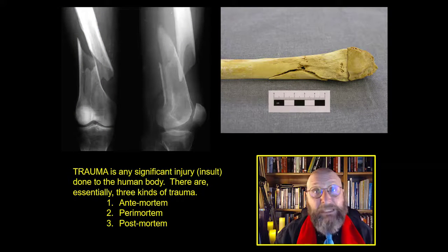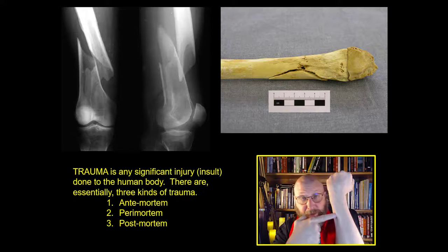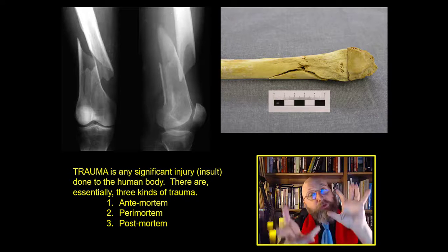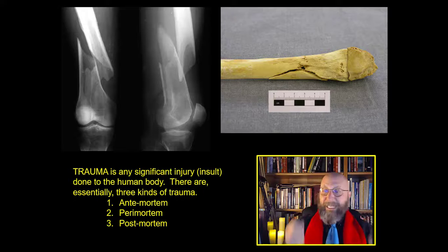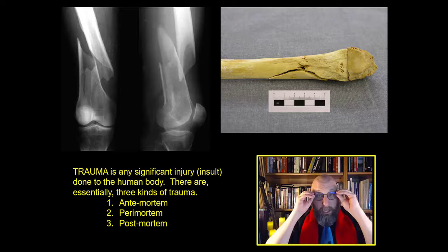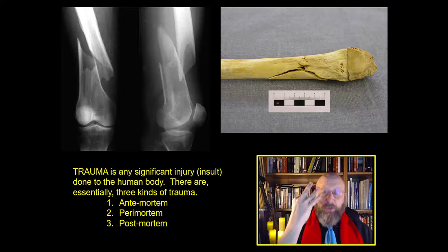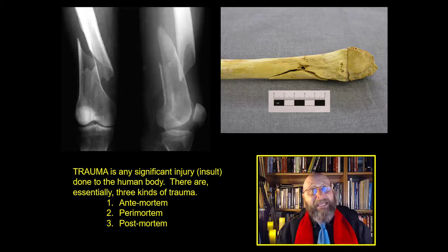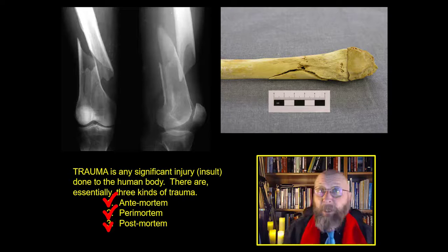Now let's get to insult to bone, also called trauma — this is when something goes wrong with the bones of the human body and they have to be repaired. Trauma is any significant injury, also referred to as insult, done to the human body. There are essentially three kinds of trauma: ante-mortem, peri-mortem, and post-mortem trauma.